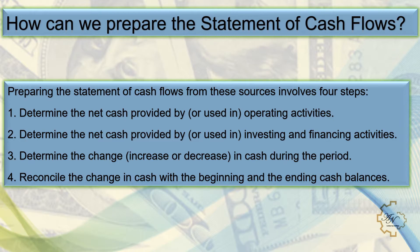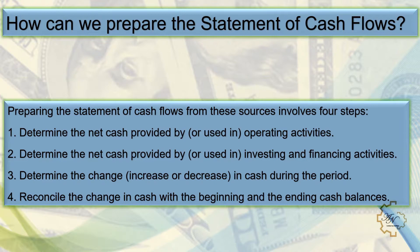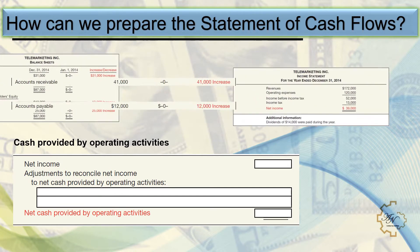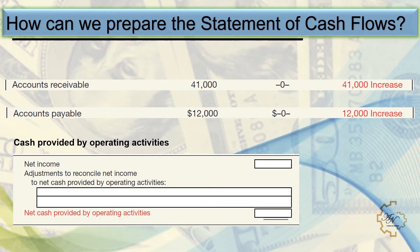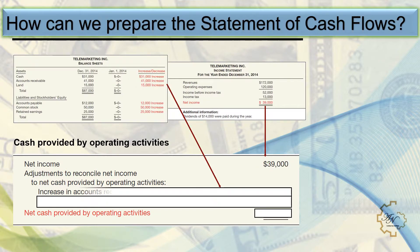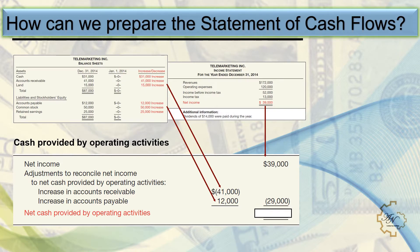Analysis of the comparative balance sheet reveals two items affecting net cash provided by operating activities. The increase in accounts receivable reflects a non-cash increase of $41,000 in revenues. The increase in accounts payable reflects a non-cash increase of $12,000 in expenses. Therefore, to arrive at net cash provided by operating activities, we deduct the increase in accounts receivable of $41,000 and add back the increase in accounts payable of $12,000. As a result, net cash provided by operating activities is $10,000.